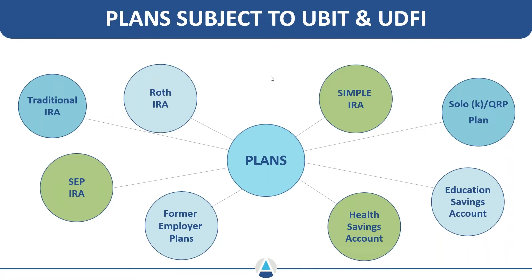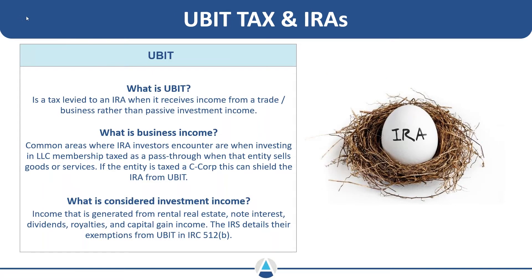It's important to understand what types of accounts can potentially be subjected to these taxes when making a particular investment, whether into private equity or into a deal that might involve debt. So let's start by understanding what UBIT taxes and IRAs are. UBIT is a tax levied when an IRA receives income from a trade or business rather than passive investment income.